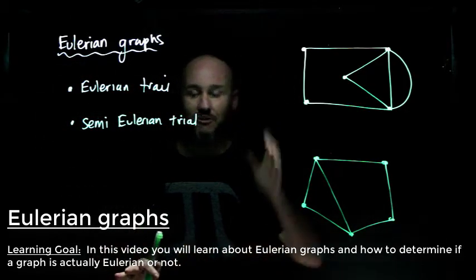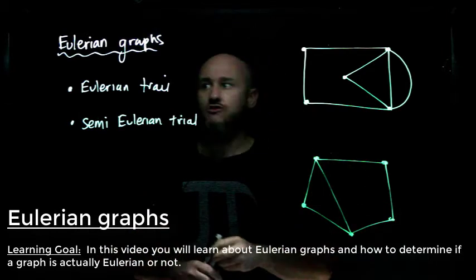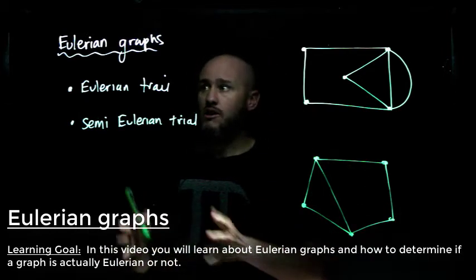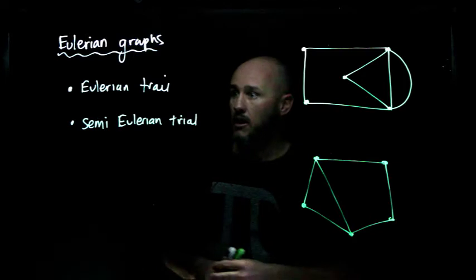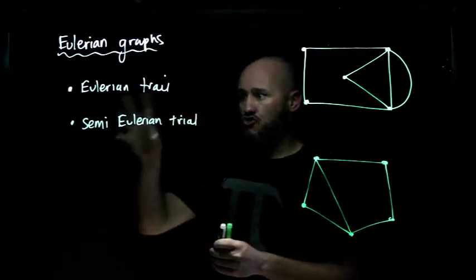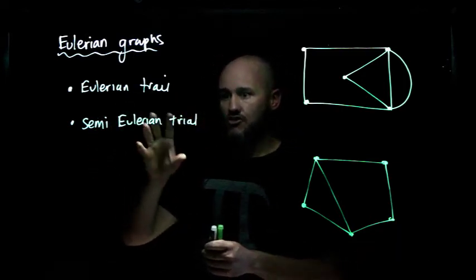Hi and welcome to my fifth video on Graph Theory, Year 12 General, Unit 4, Topic 2. We're going to talk about Eulerian graphs now. I'm going to mention Eulerian Trails and Semi-Eulerian Trails.